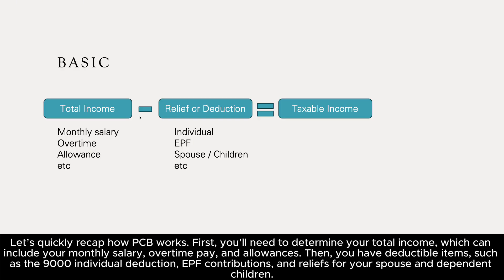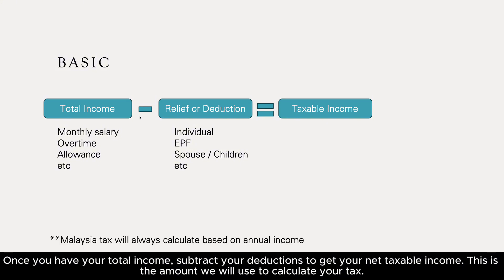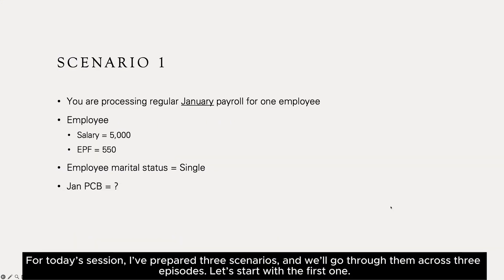Let's quickly recap how PCB works. First, you'll need to determine your total income, which can include your monthly salary, overtime pay, and allowances. Then, you have deductible items, such as the 9,000 individual deduction, EPF contributions, and reliefs for your spouse and dependent children. Once you have your total income, subtract your deductions to get your net taxable income. This is the amount we will use to calculate your tax. For today's session, I've prepared three scenarios, and we'll go through them across three episodes. Let's start with the first one.